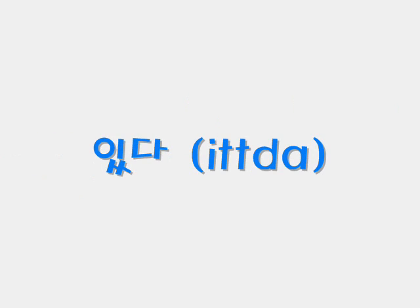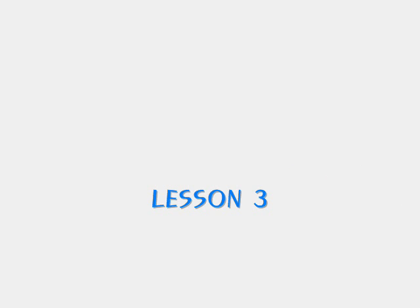Lesson number 3: the use of 있다. The basic meaning of the verb 있다 is 'to have.' It is also used as English 'to be,' 'to exist,' or 'to stay,' depending on the context. The negative of this verb is 없다, which means 'not to have' or 'not to exist.' Here are some examples.